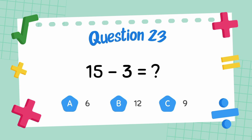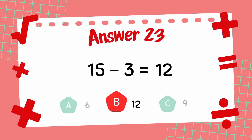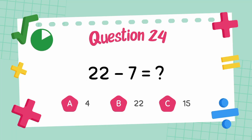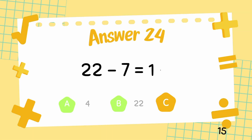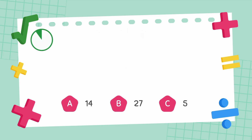What is 15 minus 3? The answer is 12. What is 22 minus 7? The answer is 15. What is 19 minus 5? The answer is 14.